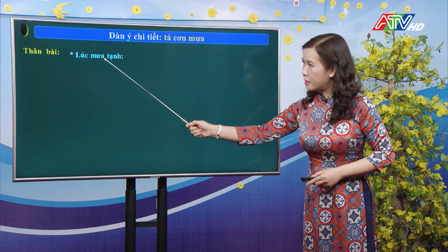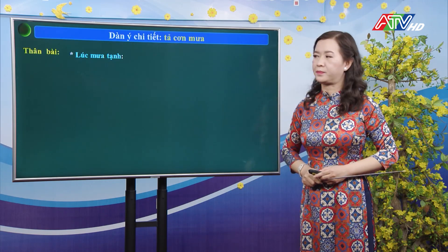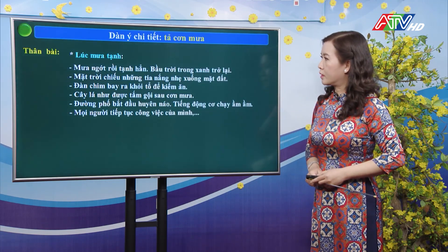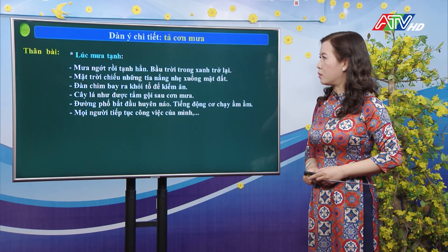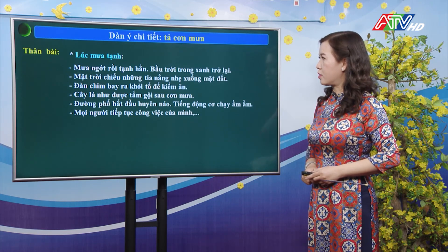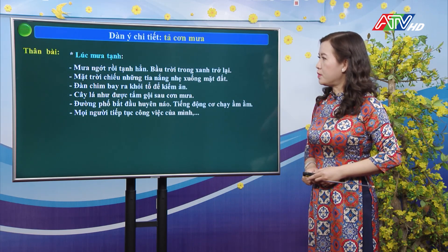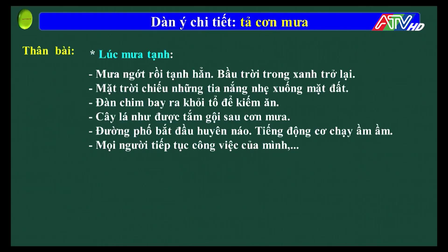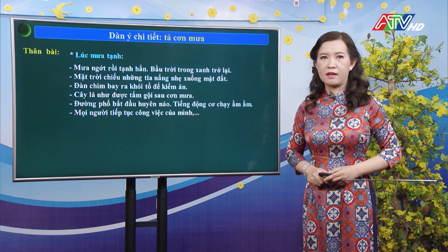Các con tả tiếp phần lúc mưa tạnh: mưa ngớt rồi tạnh hẳn, bầu trời trông xanh trở lại. Mặt trời chiếu những tia nắng nhẹ xuống mặt đất, đàn chim bay ra khỏi tổ để kiếm ăn. Cây lá như được tắm gội sau cơn mưa. Đường phố bắt đầu huyên náo, tiếng động cơ chạy âm âm, mọi người tiếp tục công việc của mình. Đến đây chúng ta kết thúc được phần thân bài.